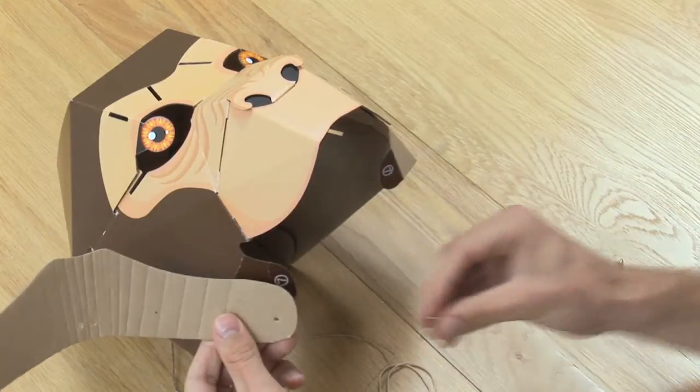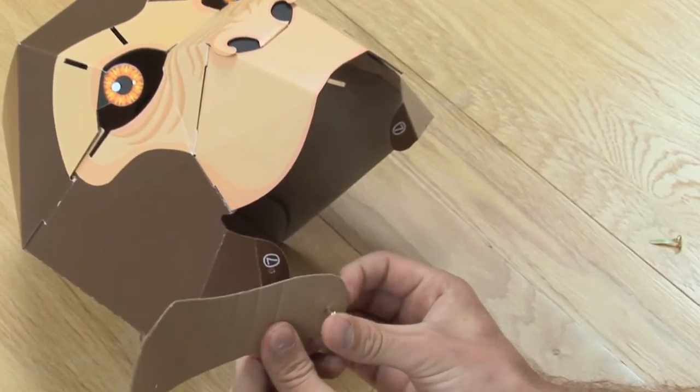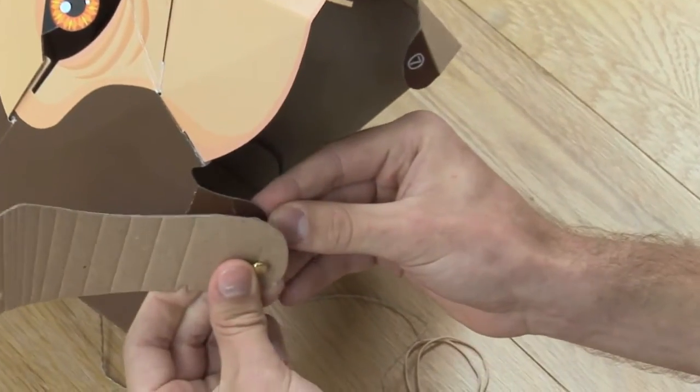Position the jaw against the side of the mask like this, then push a split pin through the holes marked 7, and open it up.